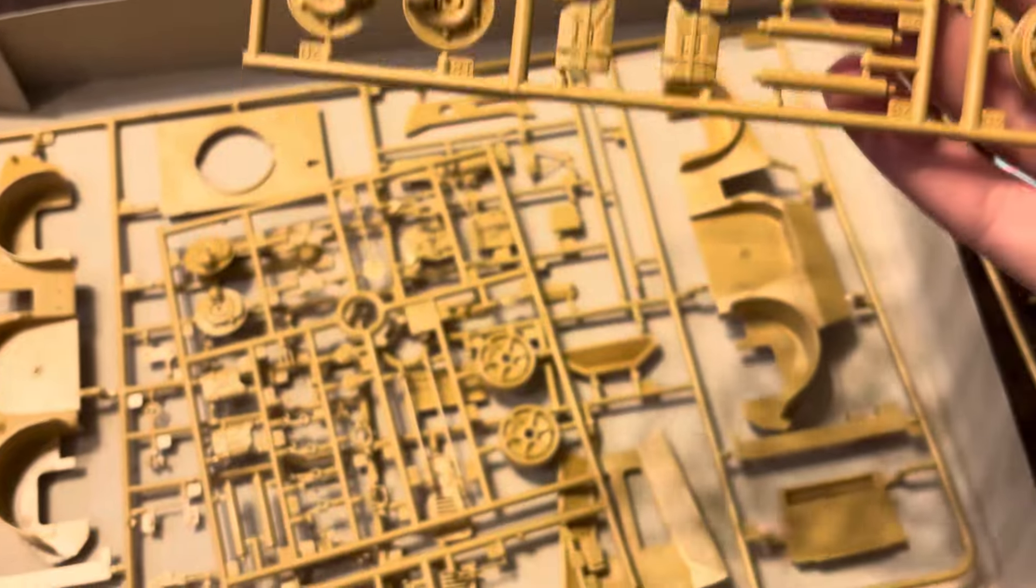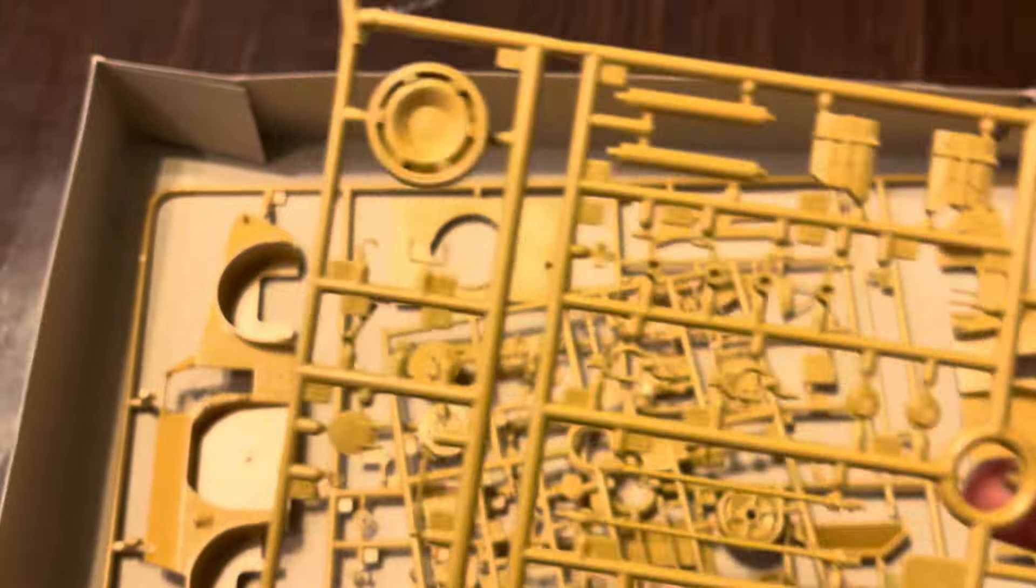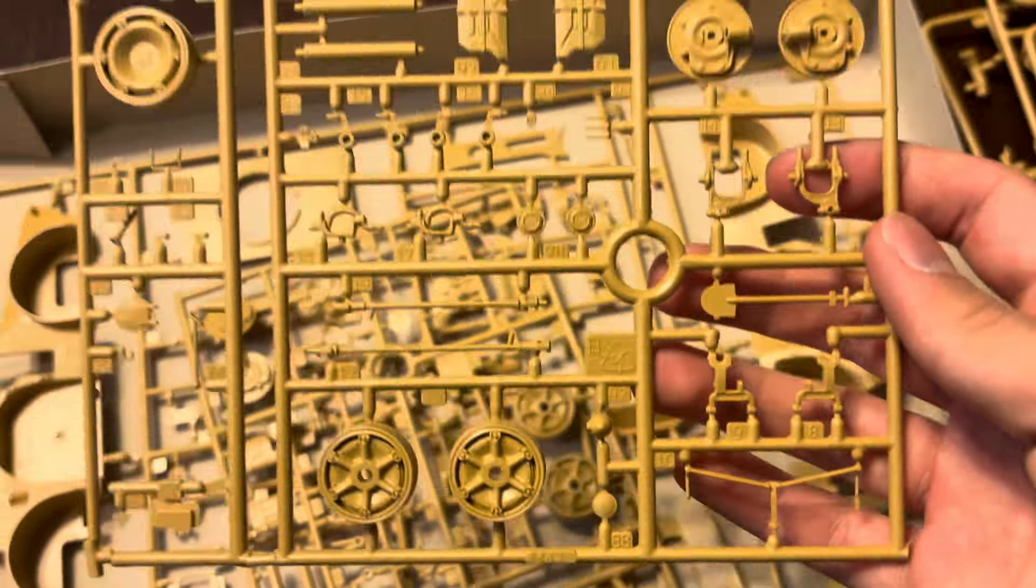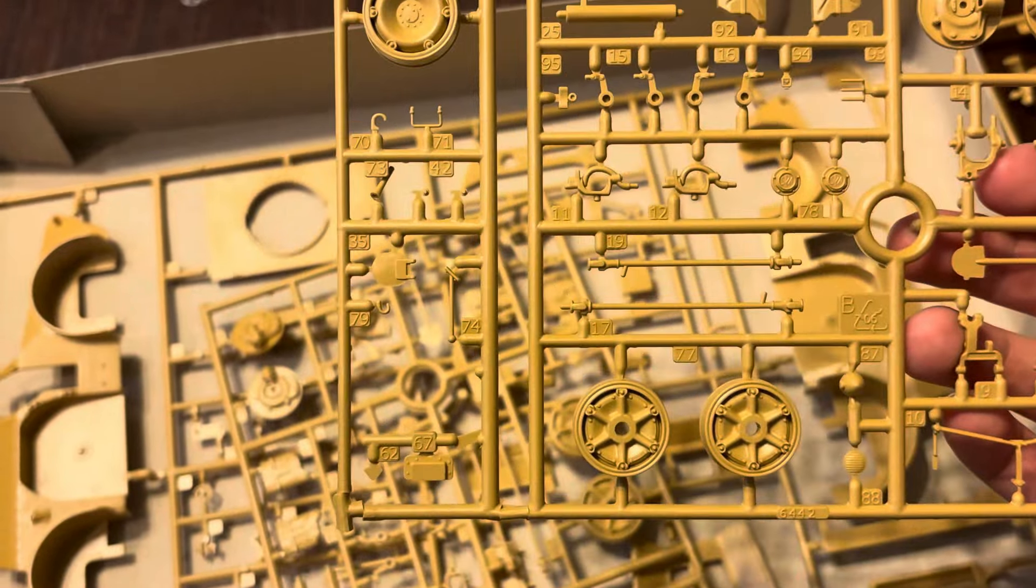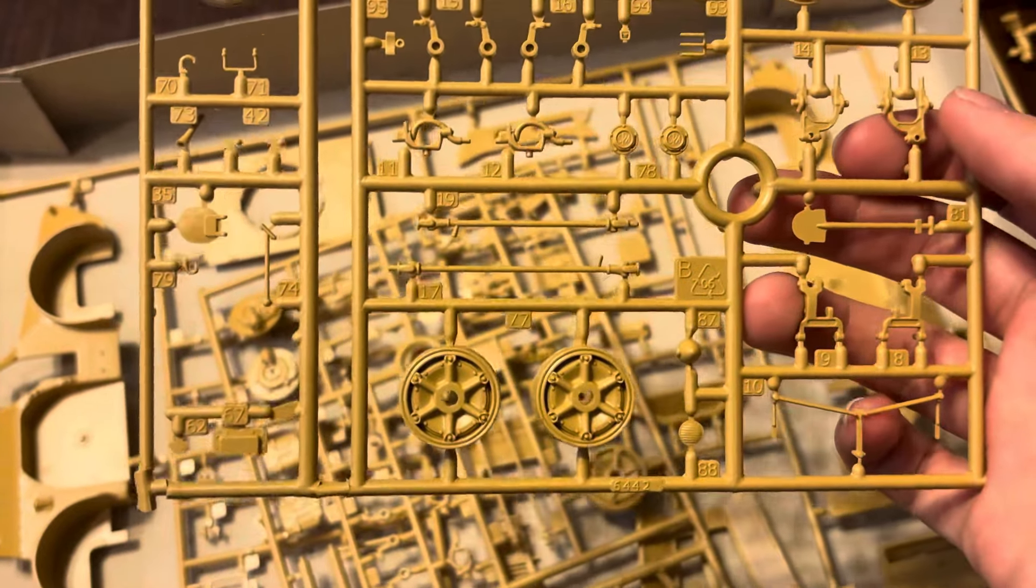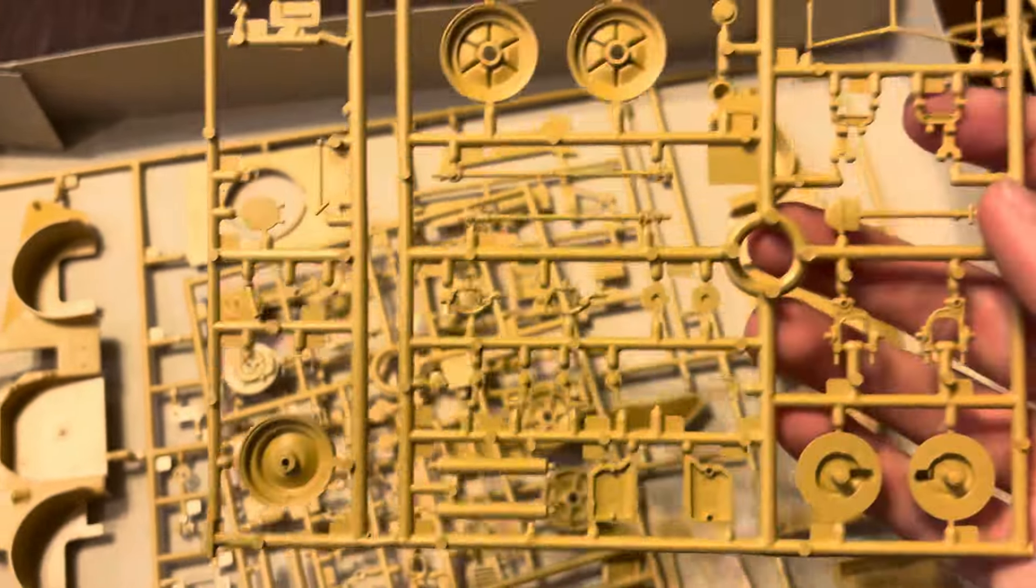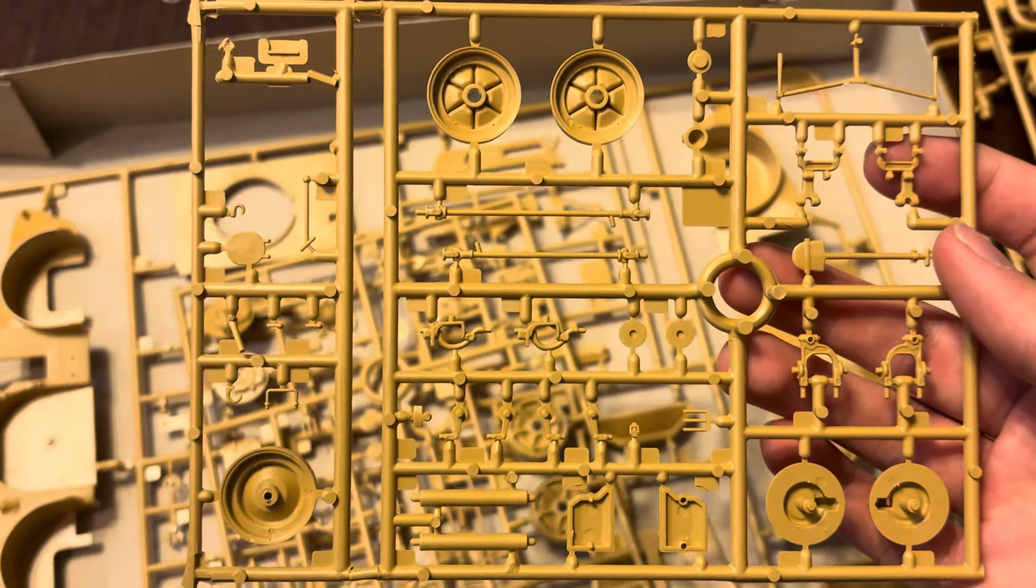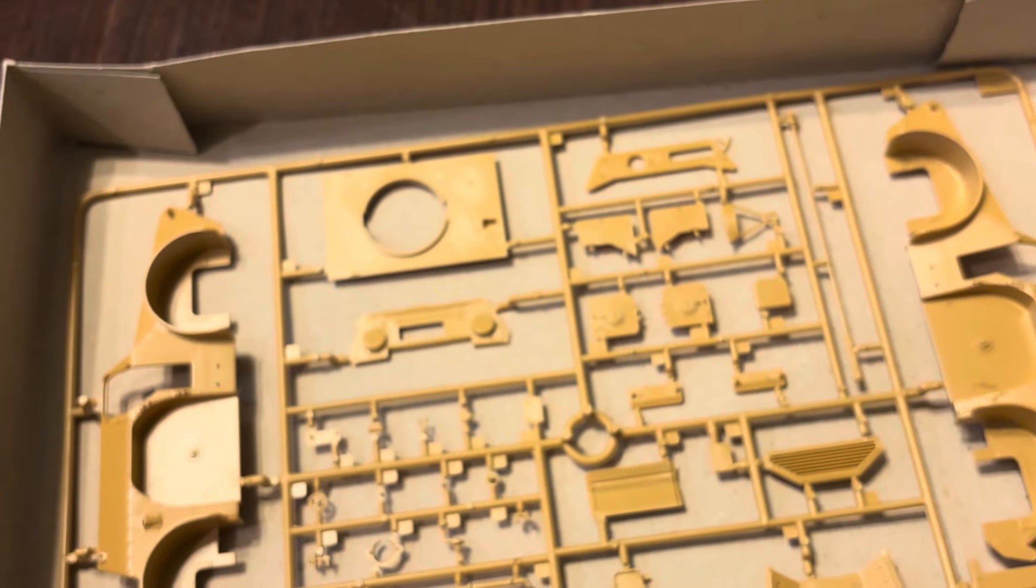Here we have tree B. Got the pioneering tools, the wheels, jerry cans, and some other stuff. I think this is for steering, the steering mechanism, headlights and other parts. We get two of those.